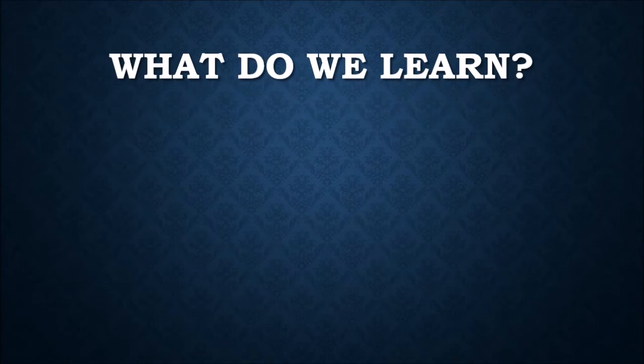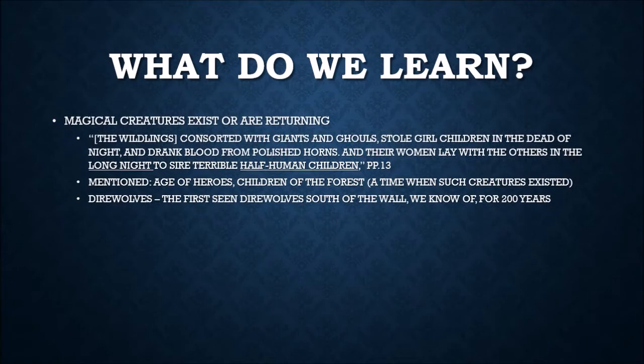What does Bran's first viewpoint chapter tell us? We learn that magical creatures exist, or are returning to this world. The wildlings consorted with giants and ghouls, stole girl children in the dead of night, drank blood from polished horns, and their women lay with the Others in the long night to sire terrible half-human children. There's mention of an event called the long night, and references to ghouls, giants, and darker elements of this world.